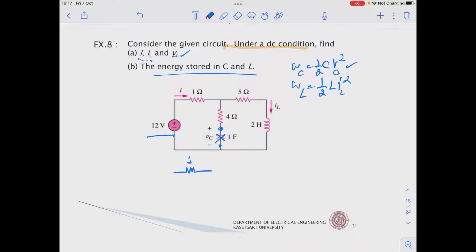So here we have 1 ohm, we have 4 ohm and then we have 5 ohm here. This one is open circuit. And under DC condition, plus minus 12V, the L will act like a short circuit. So here is a short circuit.